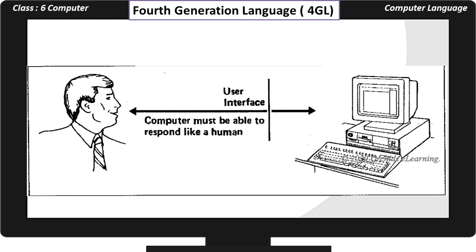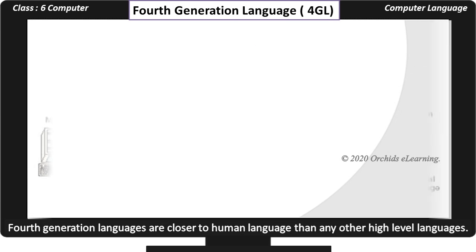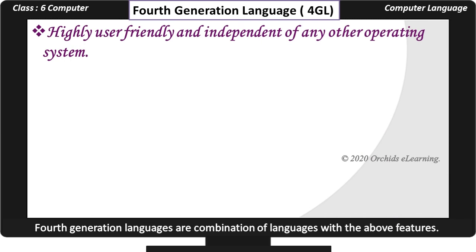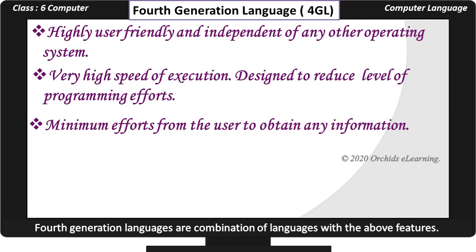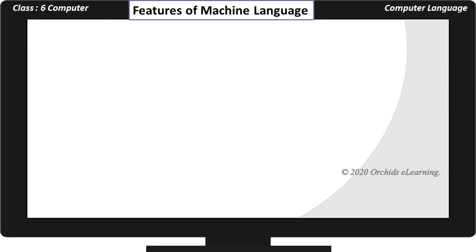Fourth Generation Language. Fourth Generation Languages are closer to human language than any other high level language. They are a combination of languages with advanced features: highly user-friendly and independent of any operating system, very high speed of execution, designed to reduce the level of programming efforts and minimize user effort to obtain information, and designed to reduce the overall time and cost of software development. In 4GL, the user has to specify only the desired output. Now let us review the features of all four languages we learned today.